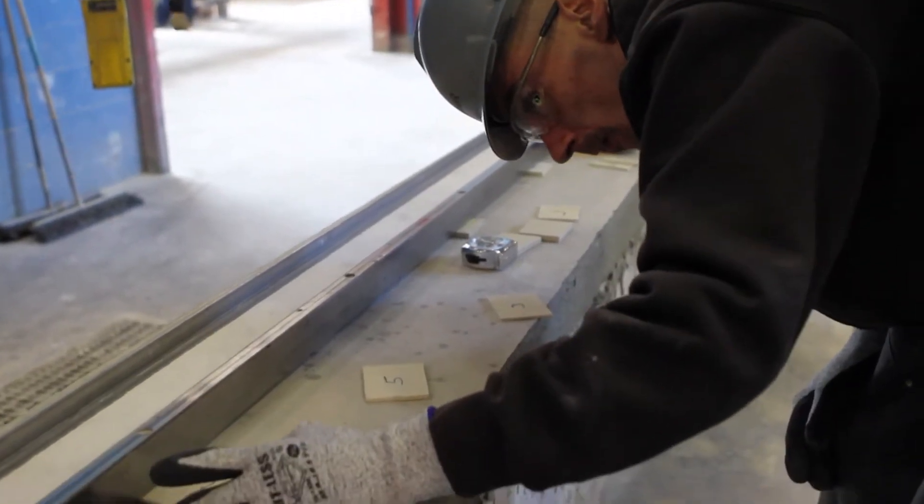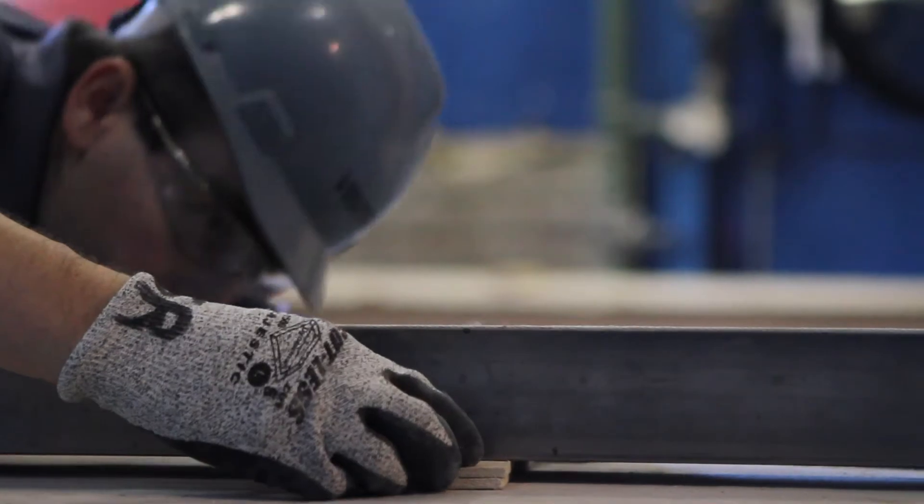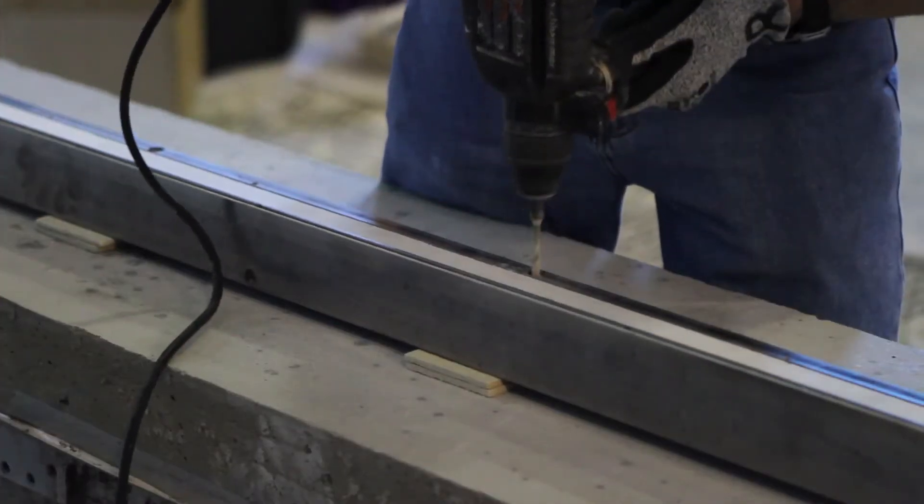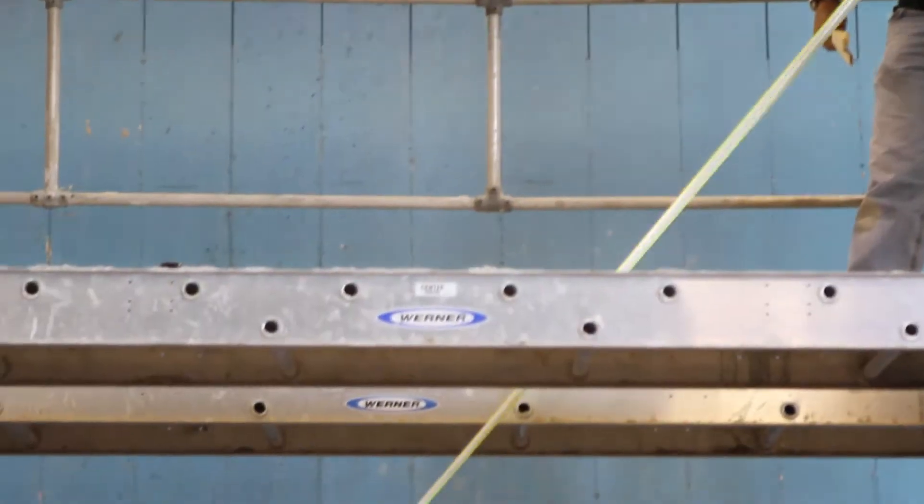Once the sill is level, carefully plumb the jams. Loosely anchor the frame to hold it in place and allow for adjustment. Using diagonal measurements, check the frame to make sure it's perfectly square.